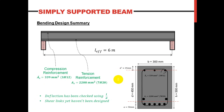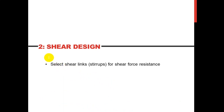Hi everyone, let's continue designing our simply supported beam as per Eurocode 2. In this Part 3, we'll be designing the shear links, also called the stirrups. As a summary of the flexure design from before: we are required to put compression reinforcement, we checked the key, and we are providing 3H12 for compression reinforcement and 7H20 for the tension reinforcement. We also checked deflection using the effective span to effective depth ratio, and it was satisfactory. Now it's time to design the shear links.